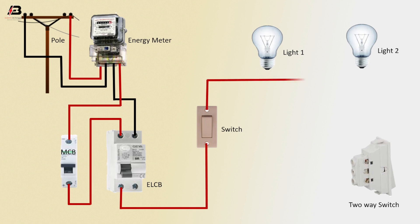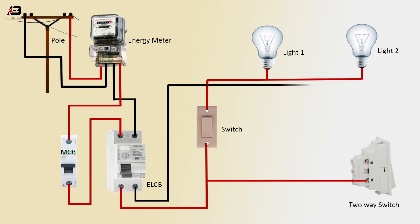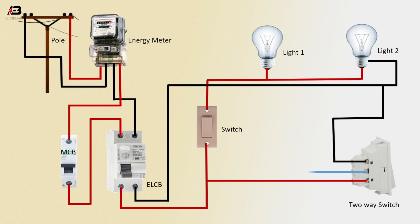Neutral connection input to ELCB circuit breaker. Output phase connection from ELCB to switch. Phase connection from switch to connect Light 2 and Light 1. Output connection from switch to 2A switch. Neutral connection from ELCB to connect Light 2, and again connect 2A switch. Output connection from 2A switch to Light 1.